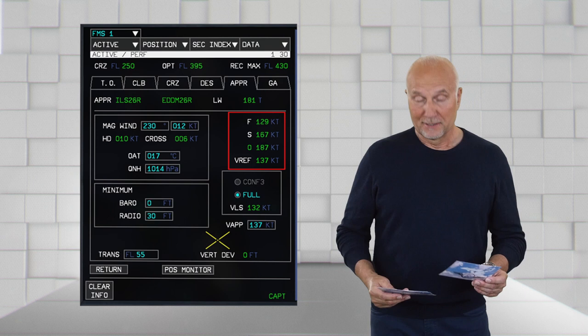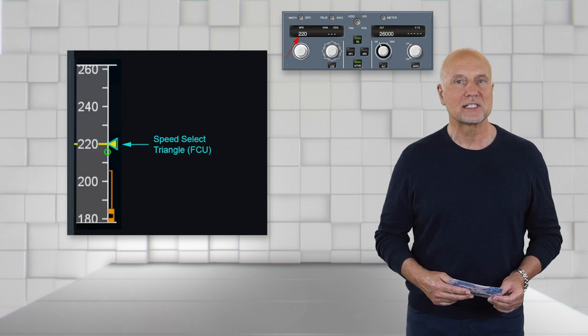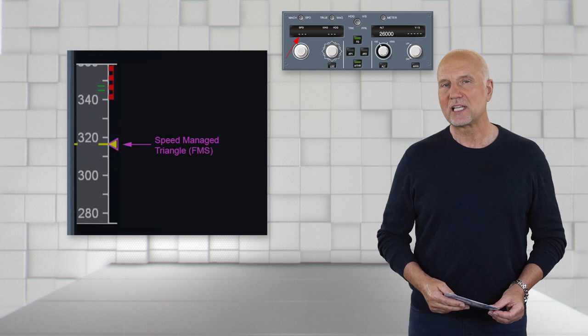As I mentioned, the PFD is a priority instrument to monitor the flight envelope and we need to understand the different indications. On the speed scale, the cyan blue triangle displays the speed which has been selected on the flight control unit. In case the speed is managed by the FMS, the triangle is magenta, and on the AFS the speed window shows dashes.